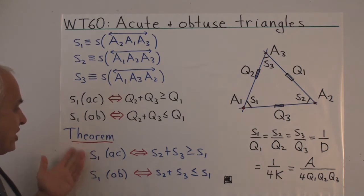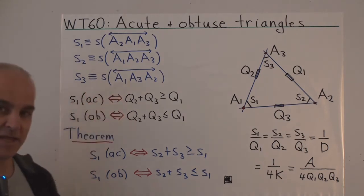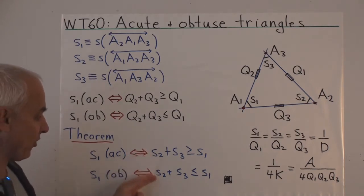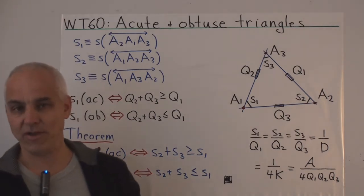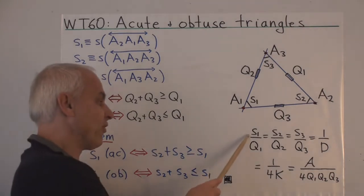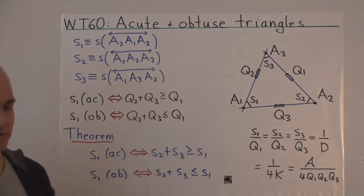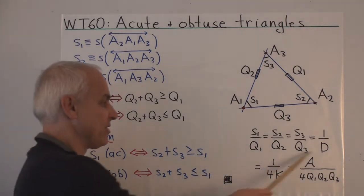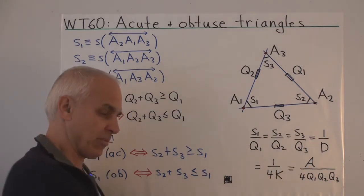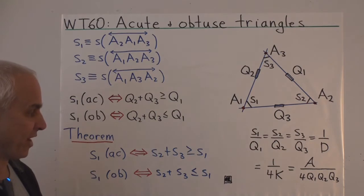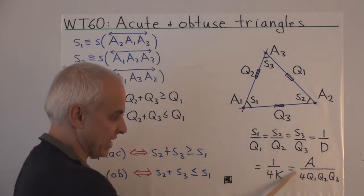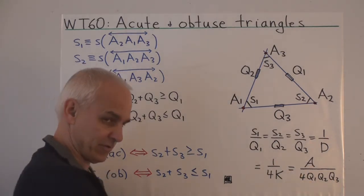Our first observation is that we can restate these inequalities in terms of quadrances by the exact corresponding inequalities involving spreads. That's because the ratio of the spread to the quadrances is constant — that's our famous spread law. D is also the same as four times the circumquadrance of the triangle, and we can also restate that in terms of the quadria and the product of the quadrances.